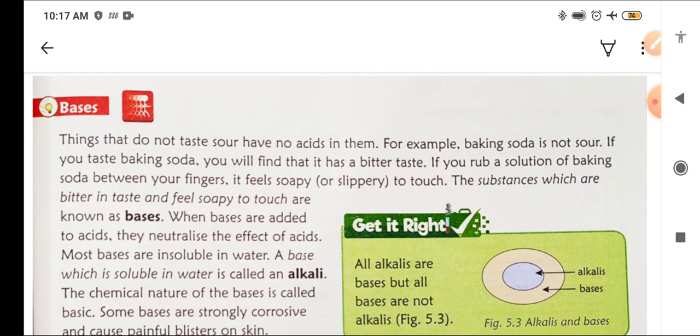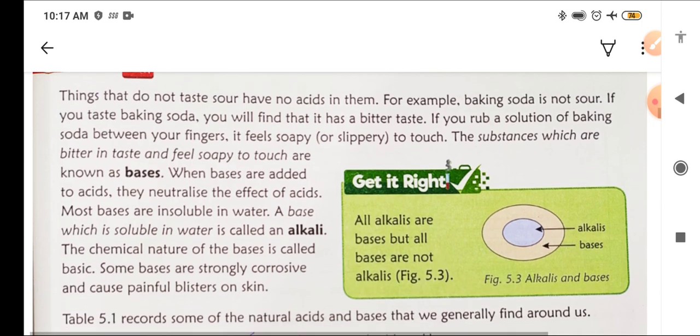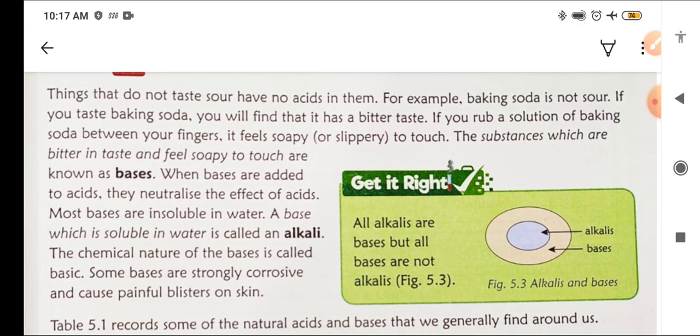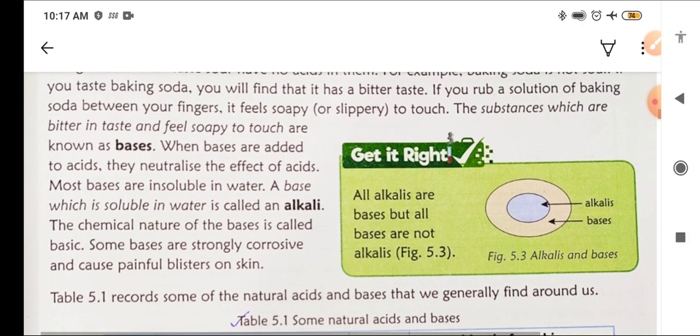Now we will see what are bases. Things that do not taste sour have no acid in them. For example, baking soda is not sour. If you taste baking soda you will find that it has a bitter taste. If you rub a solution of baking soda between your fingers it feels soapy or slippery in touch. Substances which are bitter in taste and feel soapy to touch are known as bases.